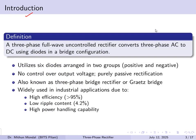The three-phase full-wave uncontrolled rectifier is defined as the circuit that converts a three-phase AC source to a DC output using diodes in a bridge configuration. Compared to the half-wave discussed previously, here we use the bridge configuration for full-wave utilization to obtain DC, and since only diodes are used, it is uncontrolled.